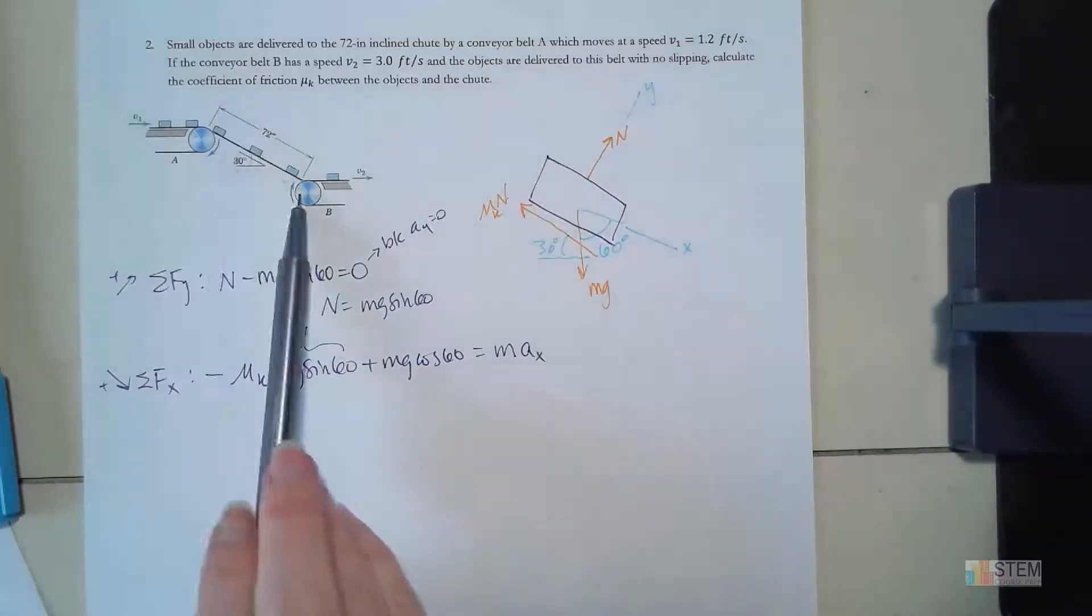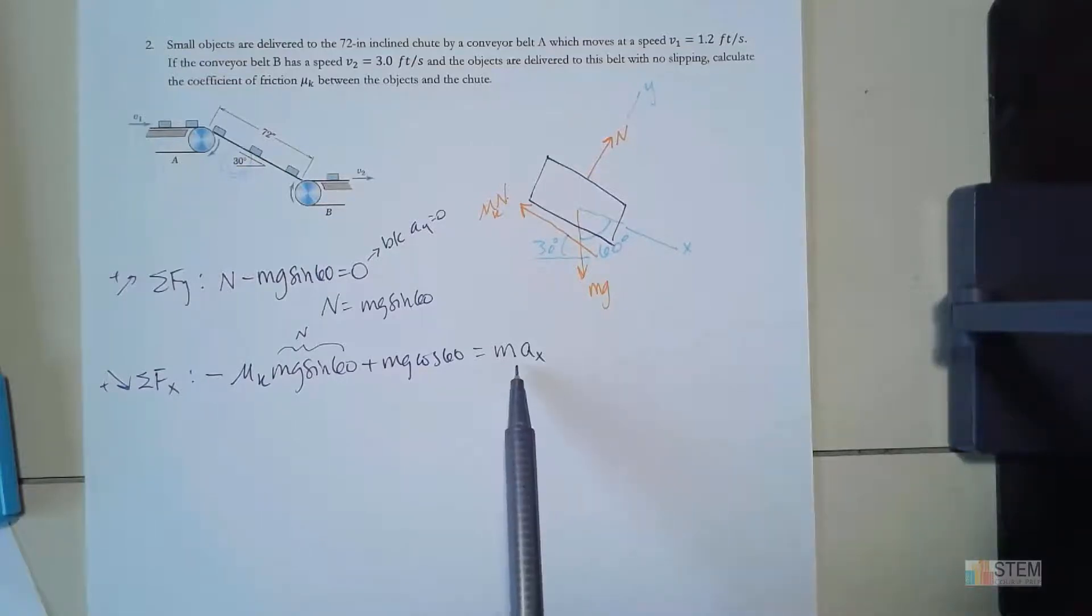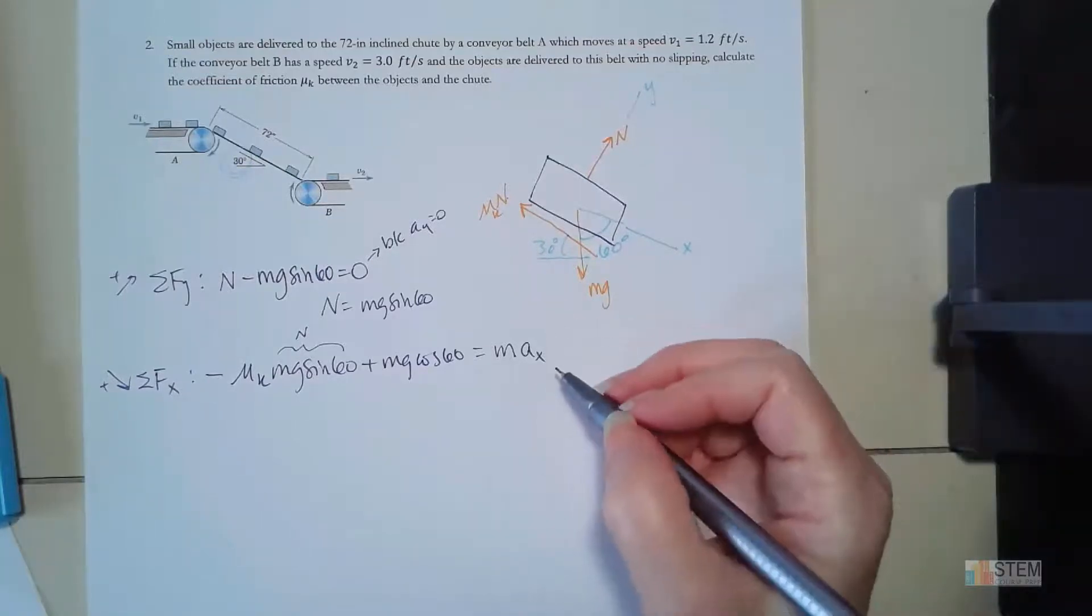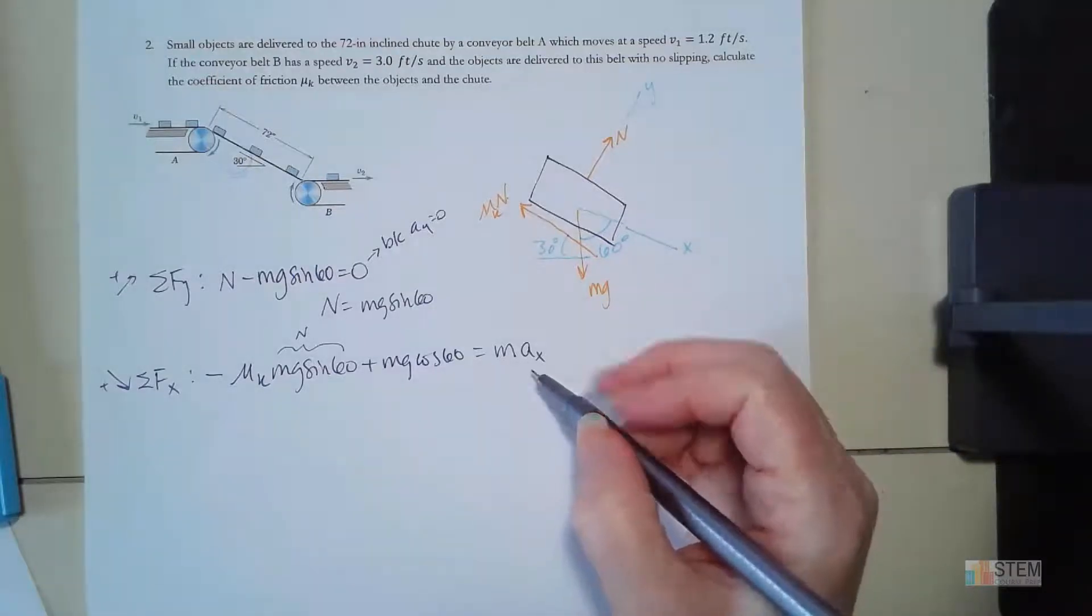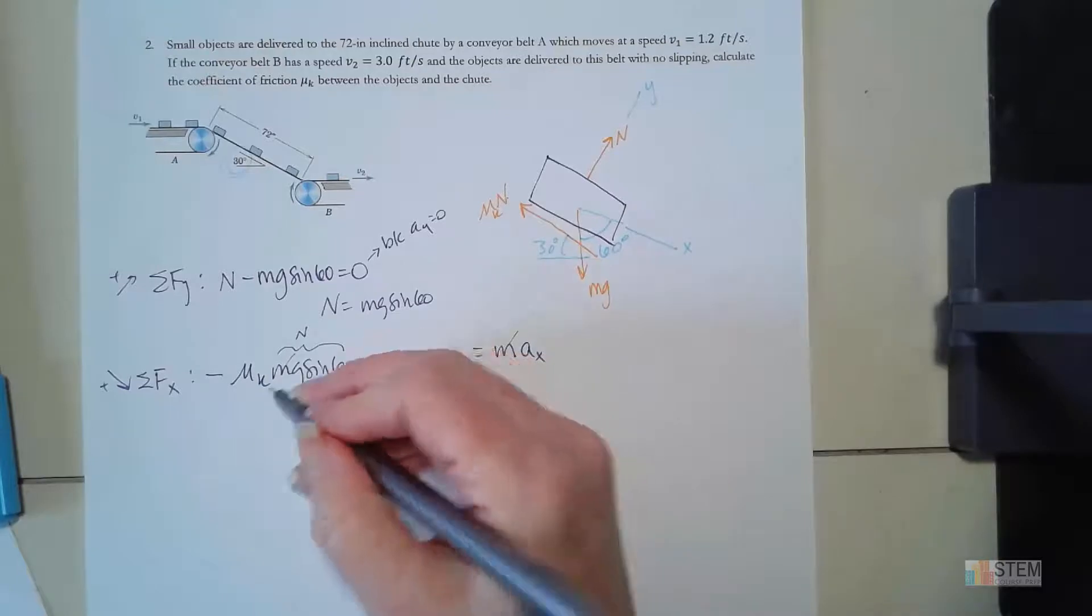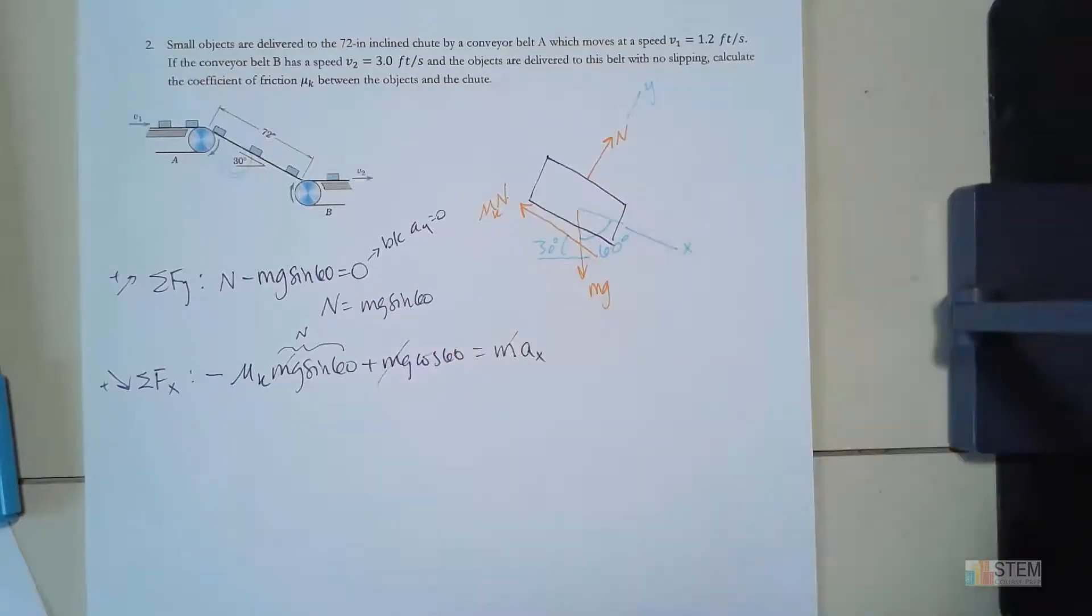So this obviously has an acceleration as it goes down this inclined chute. So now let's look and see what we can do. During the test, a couple of you asked what the mass was. But if you look at this equation, do we need the mass? No, we don't need the mass because these can all cancel out. So that goes away.